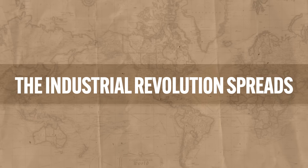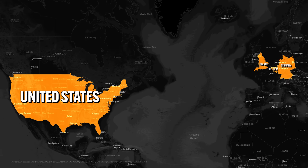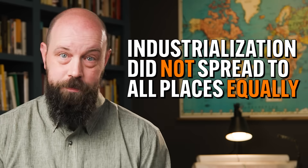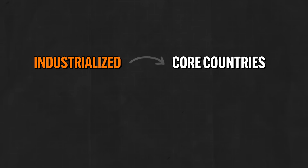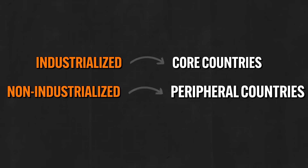As much as England would have liked to remain the only industrial power, it was only a matter of time before this revolution began to spread — first to mainland Europe, to places like Belgium and Germany, then further east, and then into the United States. However, industrialization did not spread to all places equally. Those places where industrialization was adopted are generally the places today we'd refer to as core countries, while those places where it was not adopted — usually because they were colonies of industrial countries — became periphery countries. Industrialization only took root in places that adopted the new technologies and had access to the necessary natural resources.